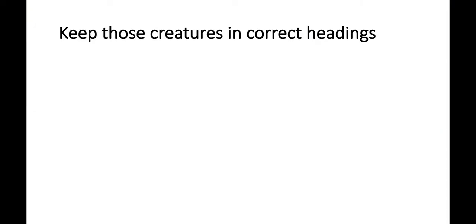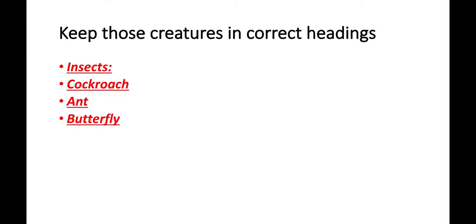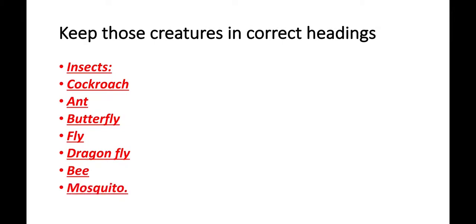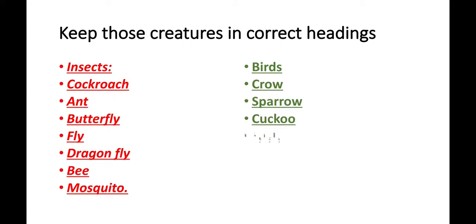I will allow the children to list out the insects and birds. What are the insects? Cockroach, ant, butterfly, fly, dragonfly, bee, mosquito. What are the birds in the chart? Crow, sparrow, cuckoo, eagle, duck, hen, pigeon. The purpose of listing the birds and insects is that they will know the spellings, differentiate between birds and insects, collectively write and learn, and come out with more insects and birds.